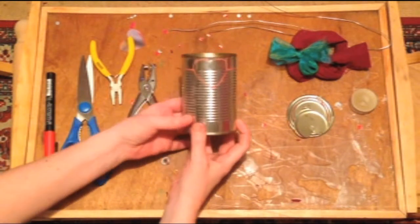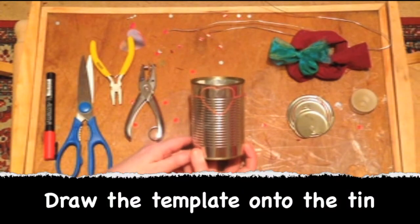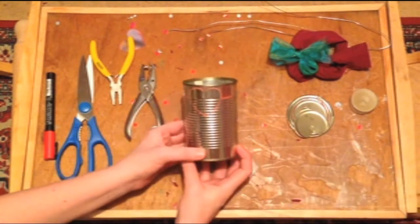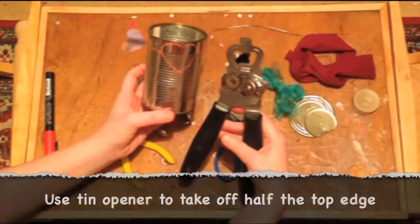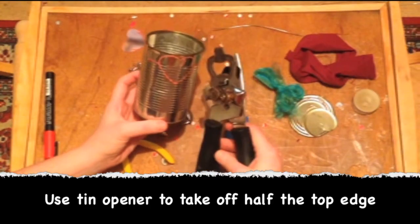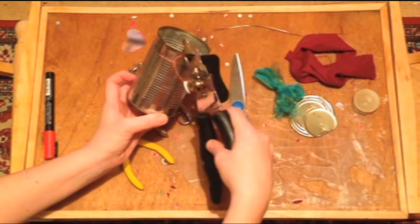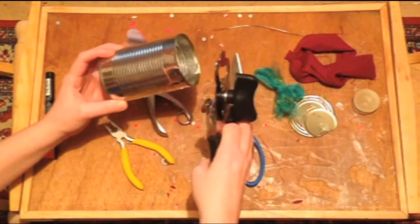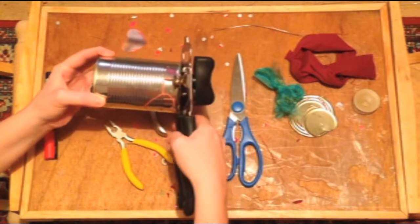I've already drawn a template around here where I'm going to cut. We're going to actually use a tin opener just to take the first little bit off the edge just round there, just where the template is and leave the rest of it on. So I'll just start doing that.